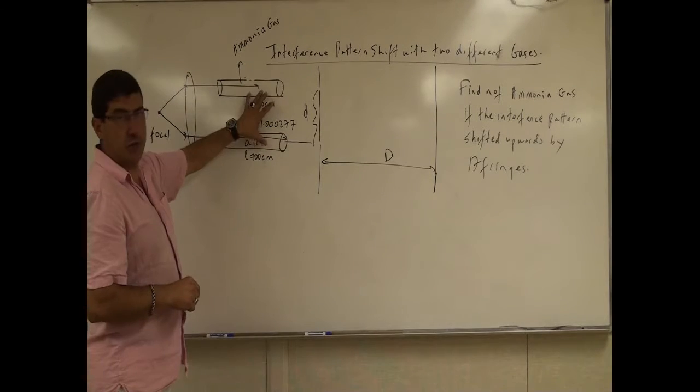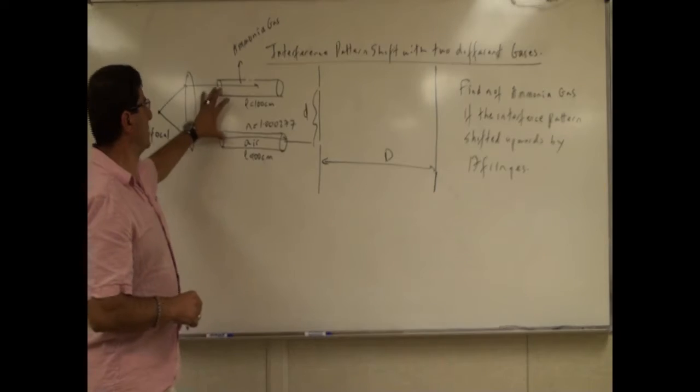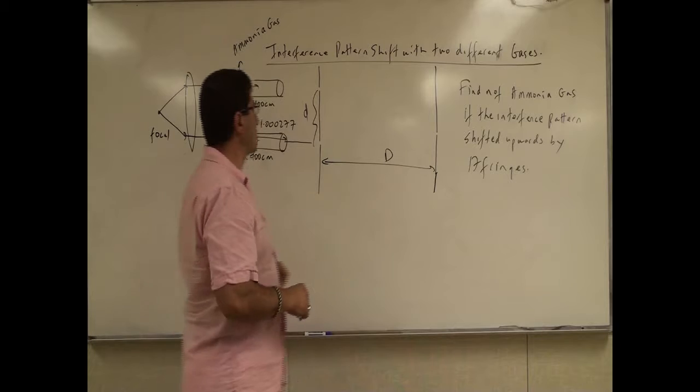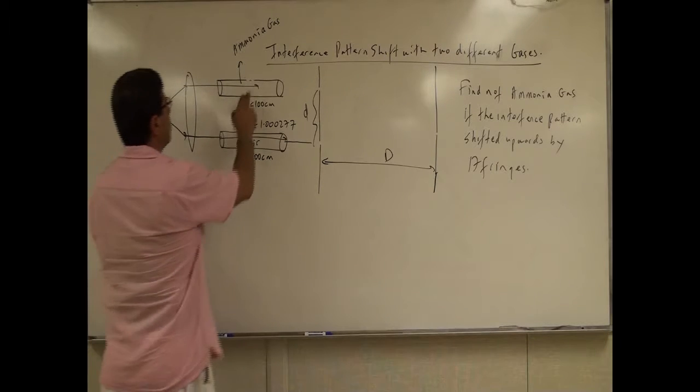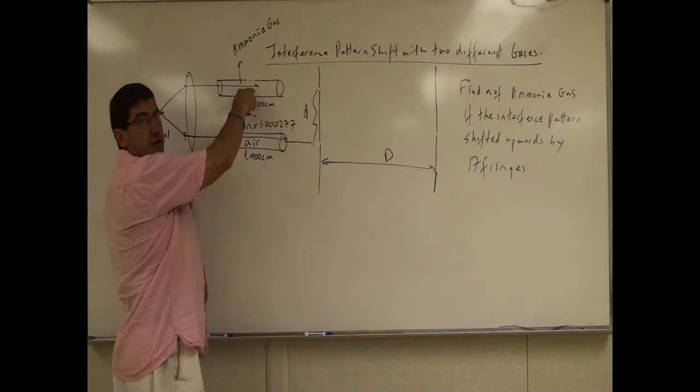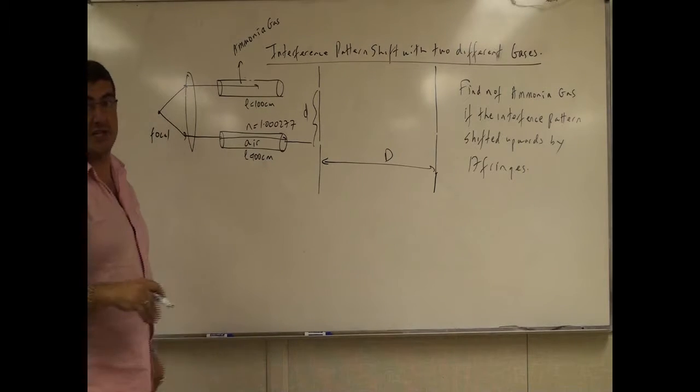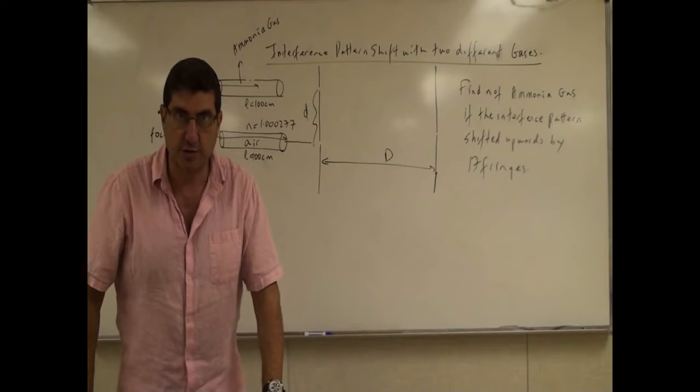Then you have two tubes. Originally they were both air. Then the light beam went through them and then it formed the interference pattern here. So the question says one of the tubes, the air was vacuumed out and instead of air they placed ammonia gas.